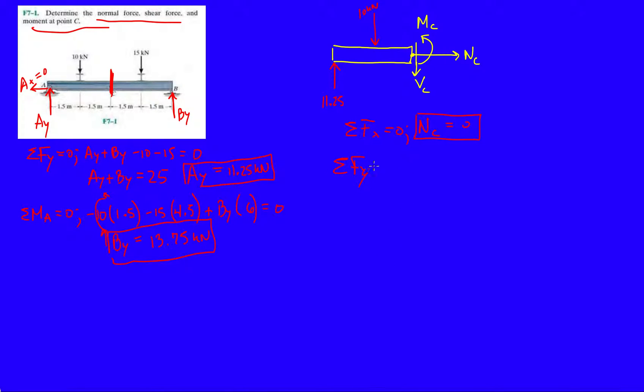F of Y, we have 11.25, minus 10, minus VC. What's that? So that's going to be 1.25. So then VC is 1.25 kilonewtons.